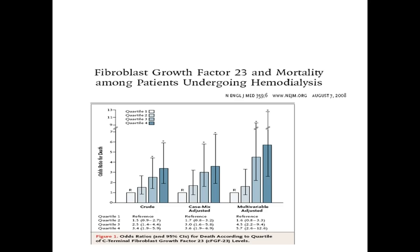FGF23 is a much more powerful predictor of mortality in people undergoing hemodialysis than phosphate alone. I give the analogy that FGF23 is possibly equivalent to glycated hemoglobin — just as HbA1c is a better predictor of diabetic complications than random blood sugars, so FGF23 is a stronger predictor than phosphate alone. This data has now been generated in observational studies for CKD patients and transplant patients: the higher the FGF23 levels, the worse the outcome for both cardiovascular and patient survival.